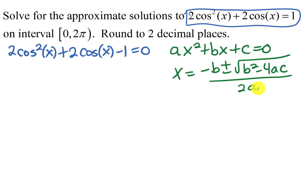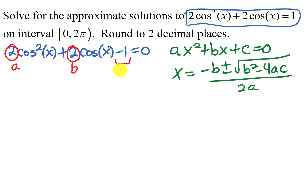This equation is quadratic in form — instead of x, the variable is cosine x. We have a cosine squared x term, a cosine x term, and a constant term. The coefficient of the squared term is a, the coefficient of the first-power term is b, and the constant on the end is c.